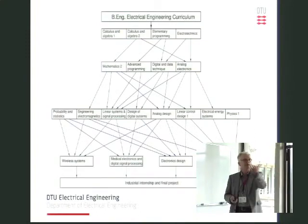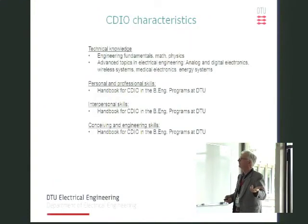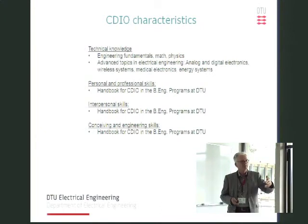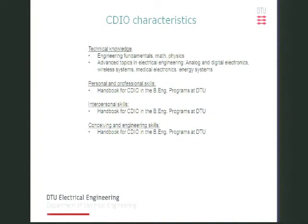The curriculum resulting from this development process will be presented in another talk. Briefly, the CDIO characteristics are taken care of. Technical knowledge is defined through the kind of model I've shown. The personal and professional skills, interpersonal skills, and conceiving and engineering skills are handled largely by the university environment, because the university has issued a handbook for CDIO in our Bachelor of Engineering programs. That handbook — about 30 pages — gives all the guidelines for implementing CDIO objectives.